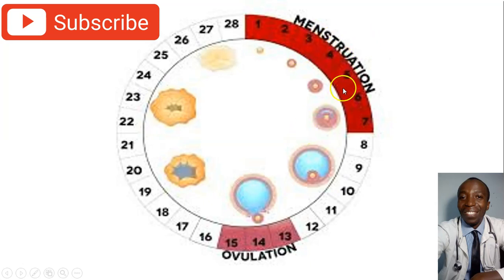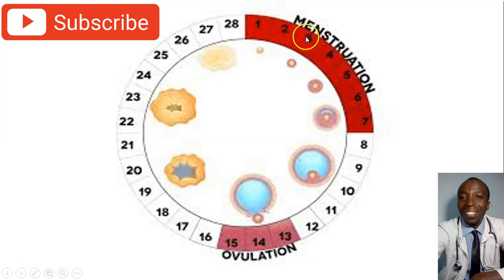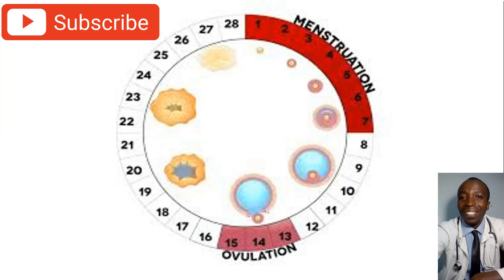When we want to count your ovulation and identify the day you are ovulating, we begin from the first day you saw your periods — that is day one — and then we count 14 days. So day one, two, three, four, five, six, seven, eight, up to 14. Day 14 is the day of ovulation. This works for women who are having regular 28-day cycles.